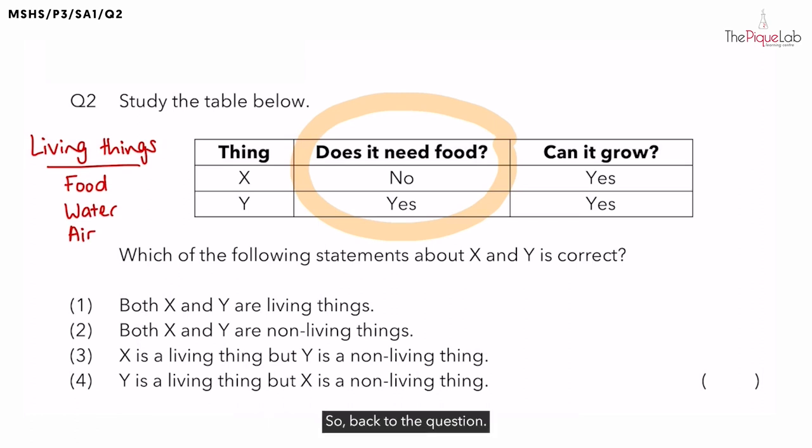Back to the question, if you look at the first characteristic here, does it need food? Are you able to identify which is the living thing between X and Y? The answer is Y. Because Y needs food, therefore we know that Y is a living thing.